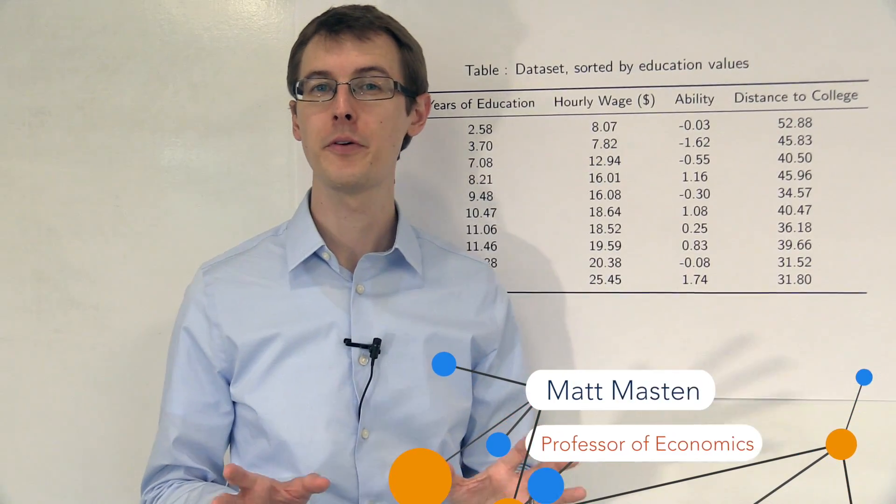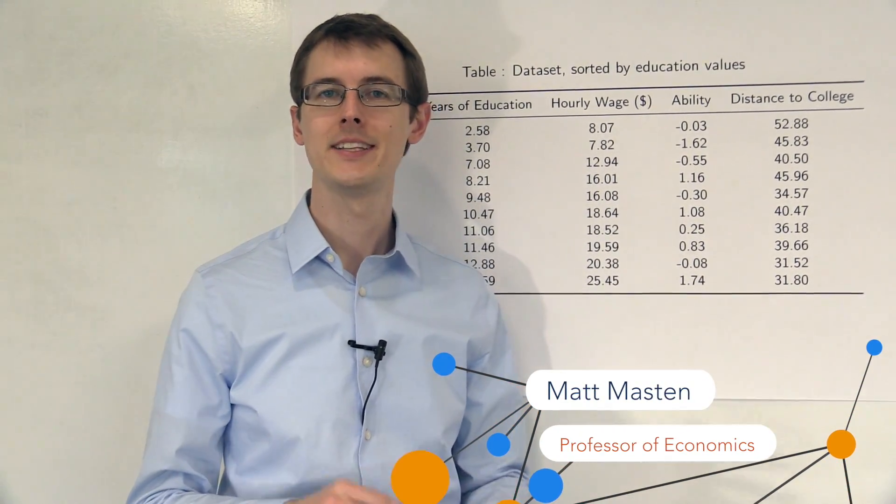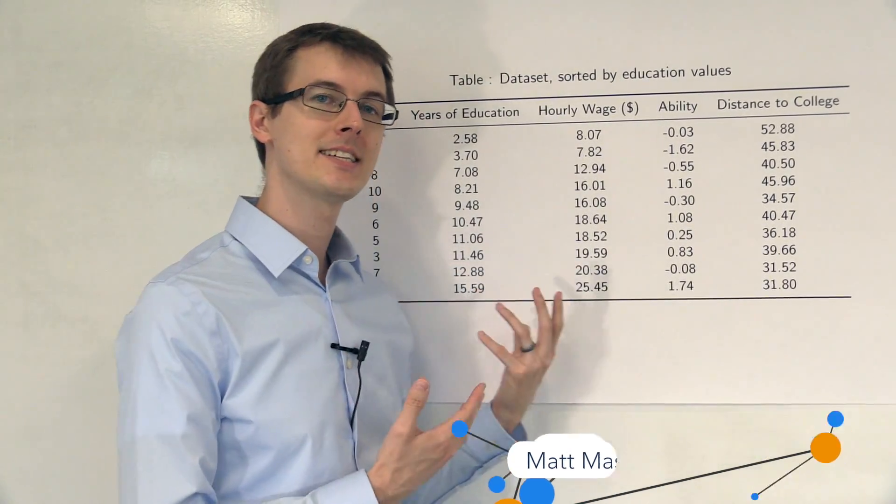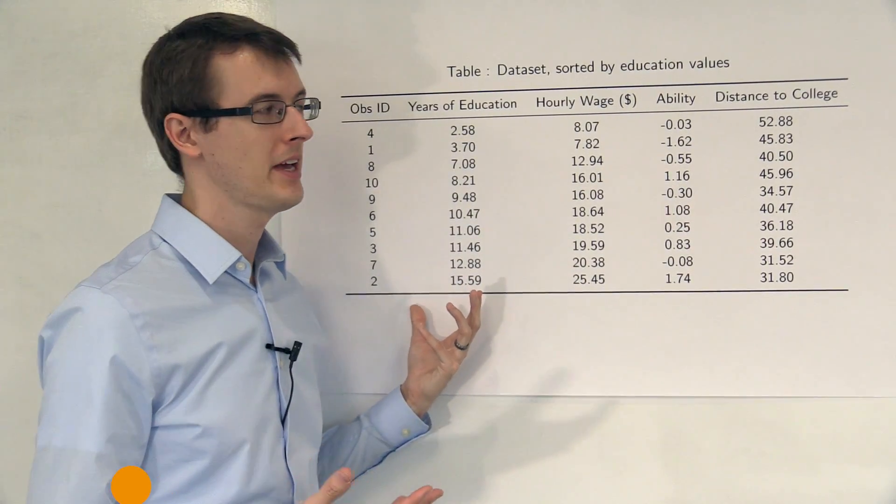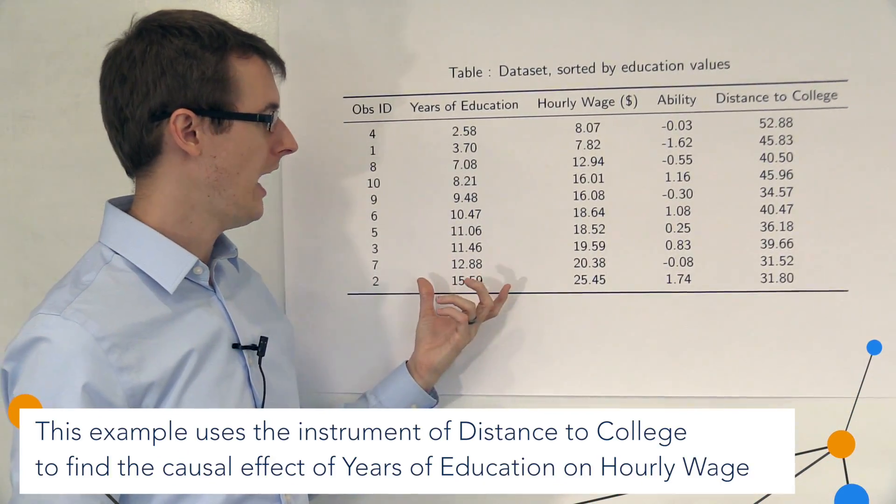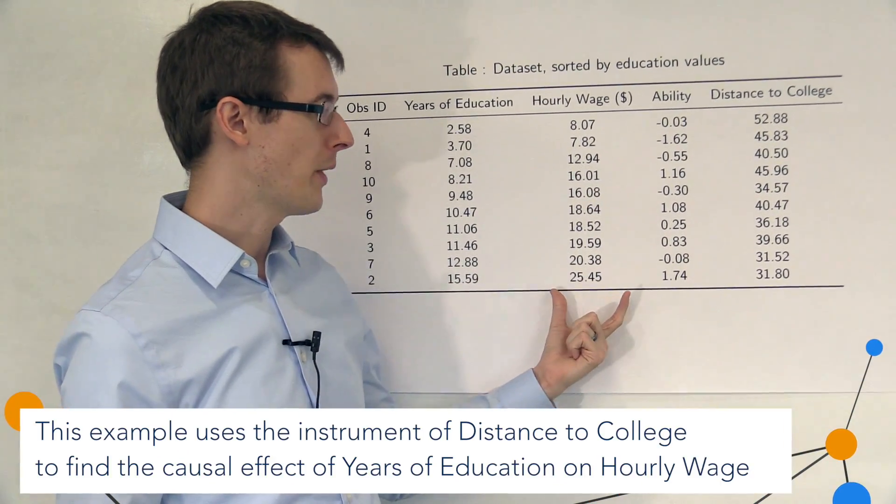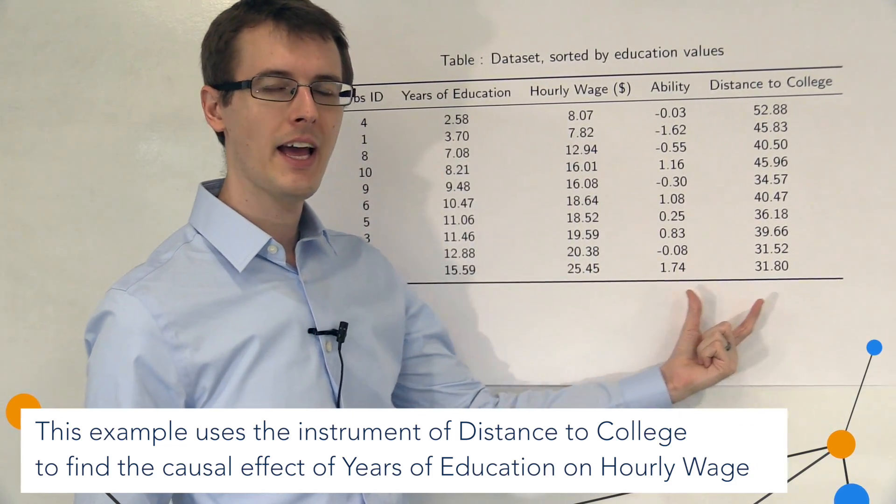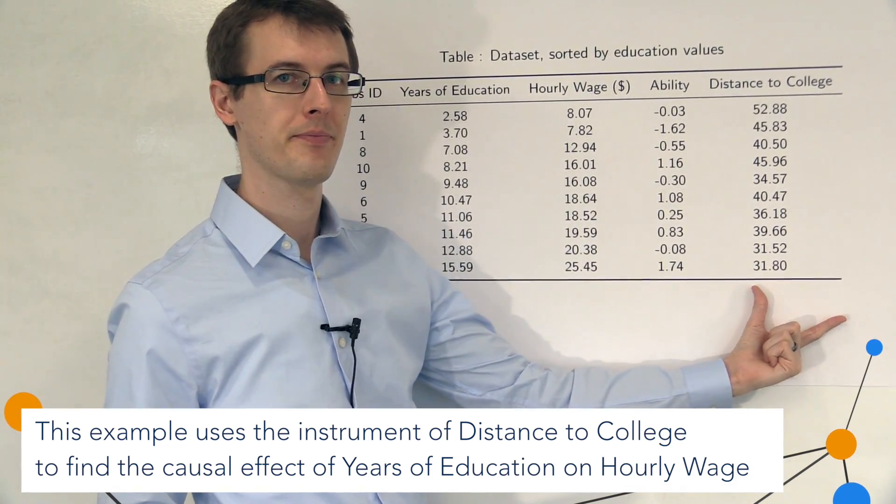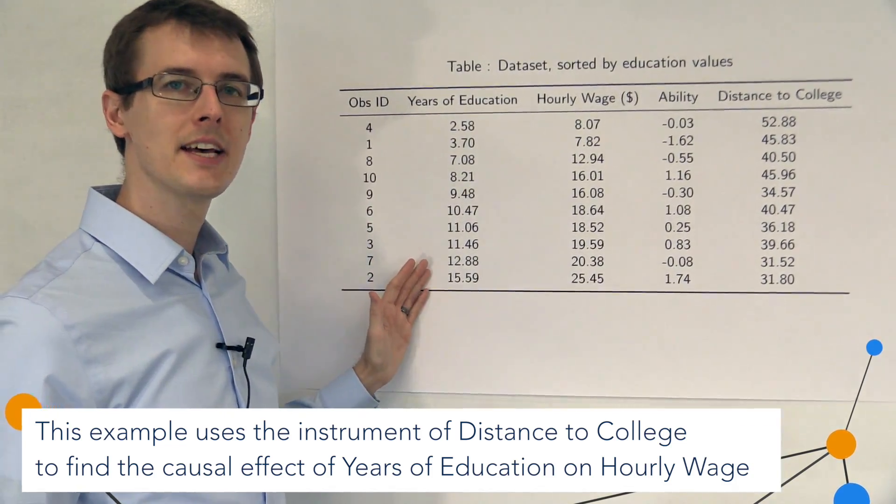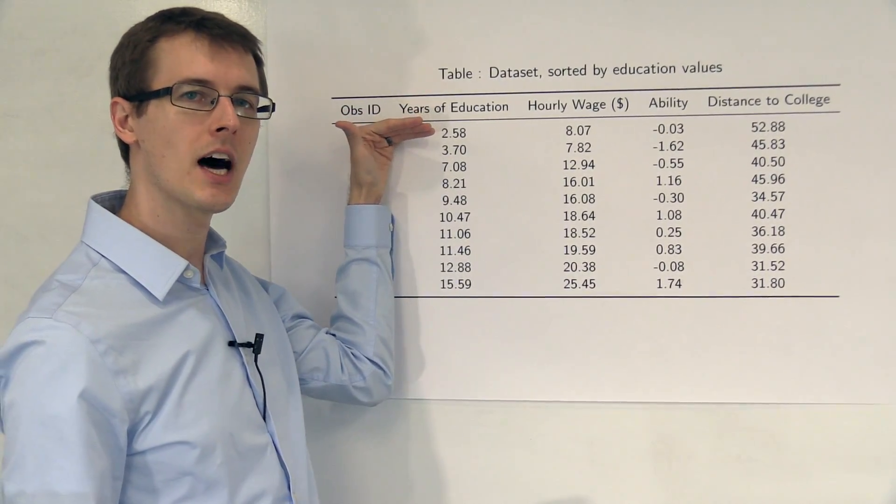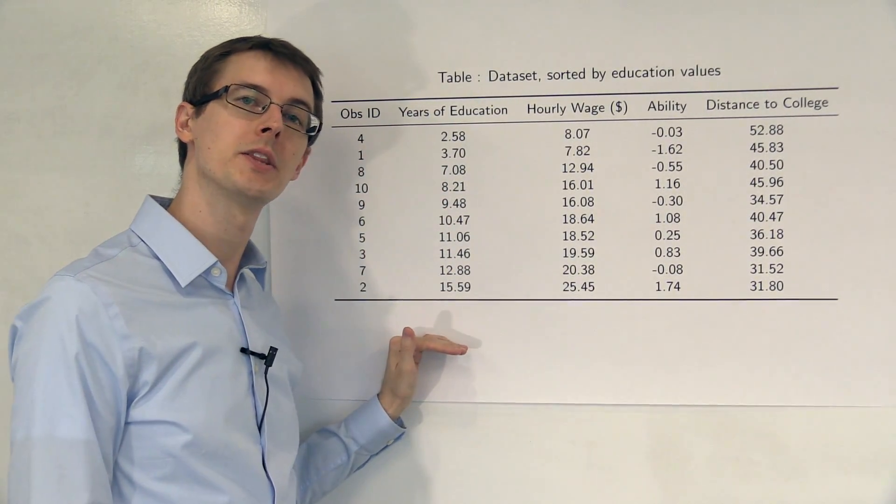Next, I'm going to illustrate how instrumental variables works using a table instead of a graph. I've got a data set here with just 10 people. And for each person, I've shown how much education they've got, how much wage they make, their ability, and how far they live from a university. So I've sorted the data set so that people with less education are at the top and people with more education are at the bottom.